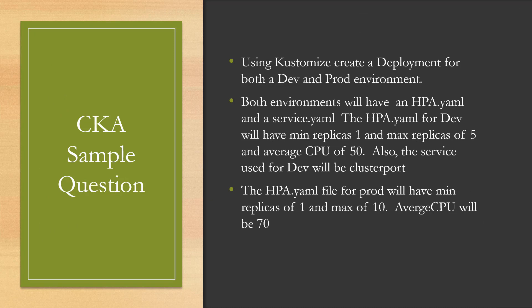The sample question: Using Kustomize, create a deployment for both the dev and prod environments. Both environments will have an HPA.yaml and a service.yaml. The HPA.yaml for dev will have a minimum replicas of 1, a max replica of 5, and average CPU of 50. The service used for dev will be a ClusterIP.